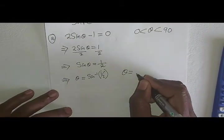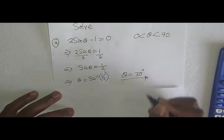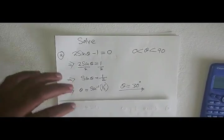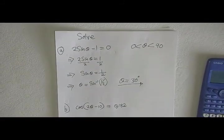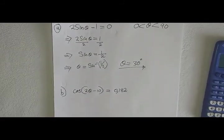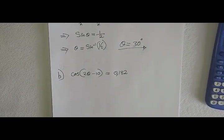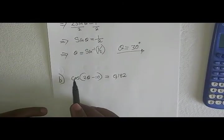Therefore, θ equals 30 degrees. That's how we solve for that one. Then going forward, we now need to solve the next equation which is cos(2θ - 10) = 0.182.